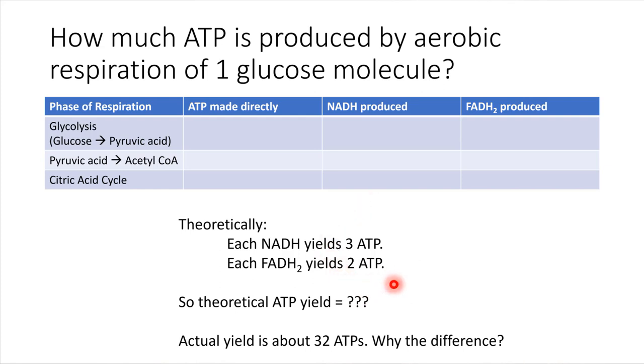see if you can calculate what is the theoretical ATP yield for one molecule of glucose. And I'm just going to tell you up front, you're going to get a number other than 32. So go ahead and see if you can calculate how many ATPs are produced, and then resume the video and we'll talk about this. So go ahead and pause it and give that table a try.